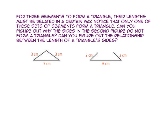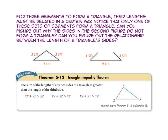For three segments to form a triangle, their lengths must be related in a certain way. Notice that only one set of segments forms a triangle. The triangle inequality theorem states that the sum of the lengths of any two sides of a triangle must be greater than the length of the third side. So the length of XY plus YZ must be greater than XZ, and similarly for all three combinations of sides.